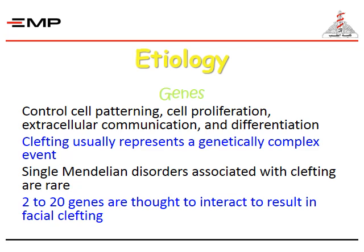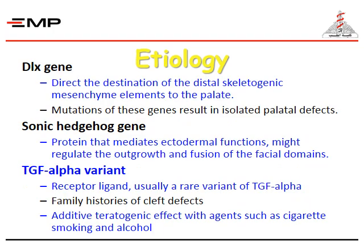Clefting usually presents as a genetically complex event. Single Mendelian disorders associated with clefting are rare. Two to twenty genes are thought to interact to result in facial clefting. The DLX gene directs the destination of the distal skeletogenetic mesenchyme elements to the palate, and mutations of these genes result in isolated palatal defects.